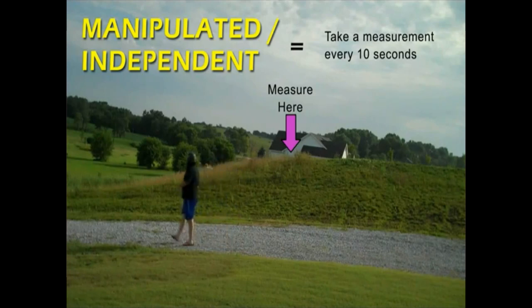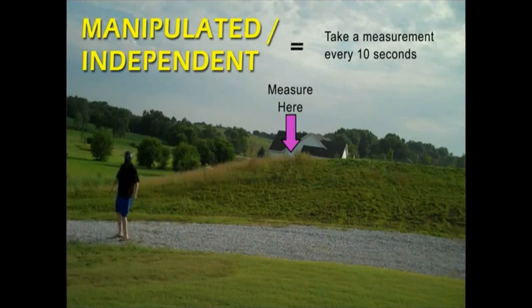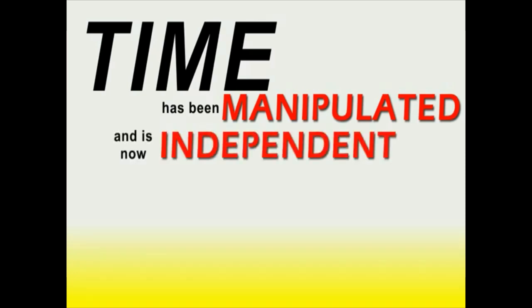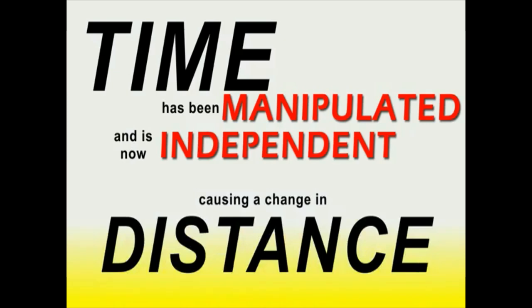In this case, we'll choose to measure every 10 seconds. Time has been manipulated, or fixed, by choosing to measure every 10 seconds, making time independent of how far the distance George has gone.